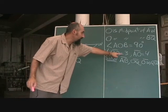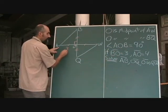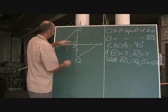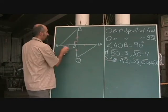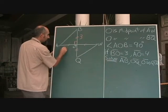If BO is 3 and AO is 4. BO is 3 and AO is 4.